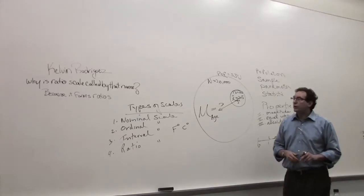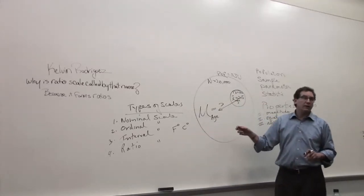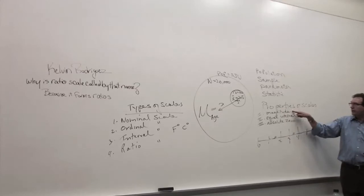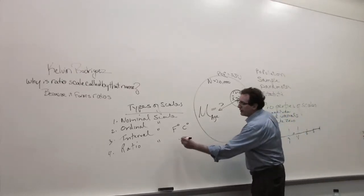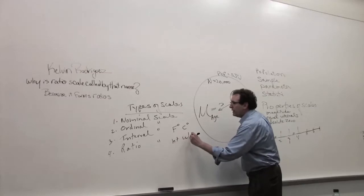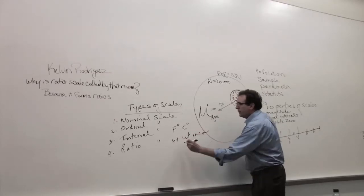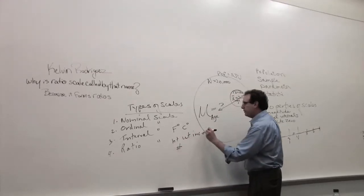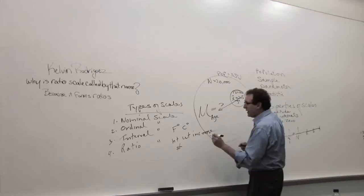And finally, the ratio scale has all the good properties the scale should have: magnitude, equal intervals, absolute zero. Examples of that would be everything like size, height, weight, income, number of children.